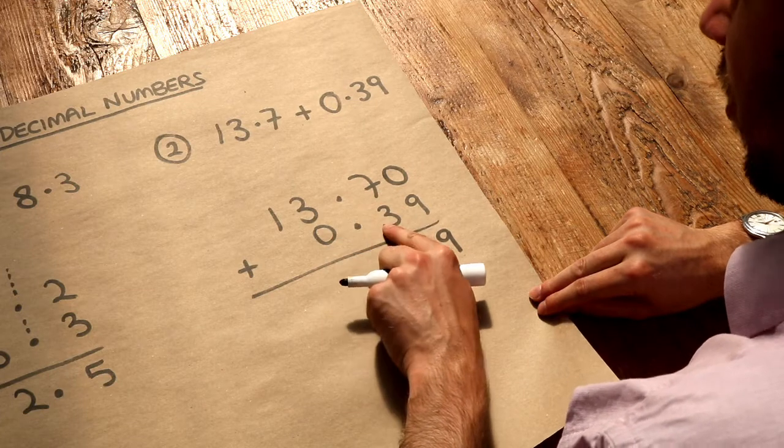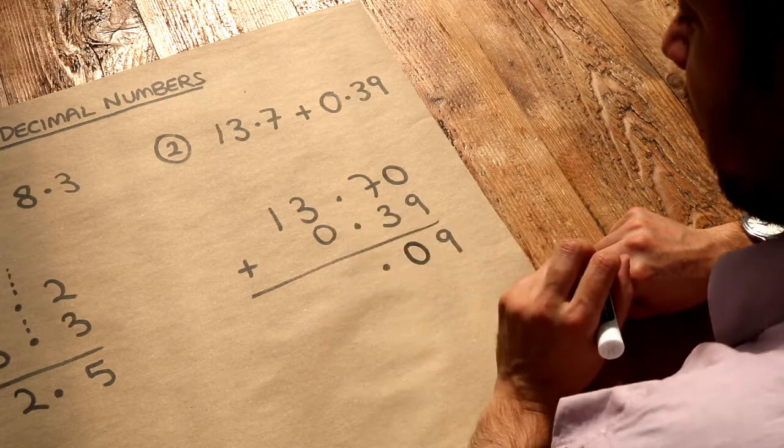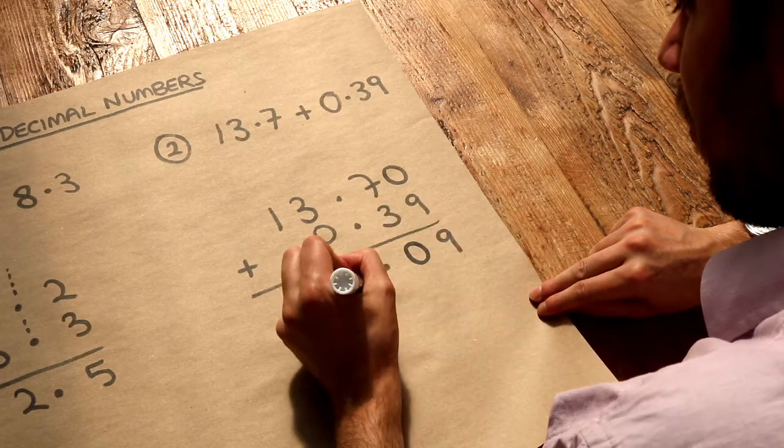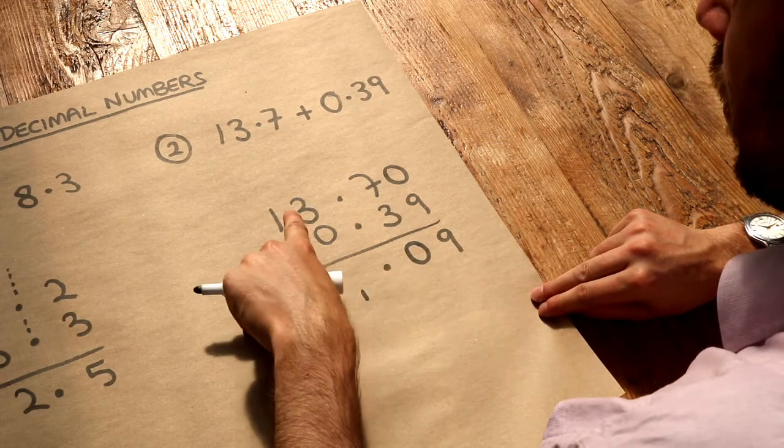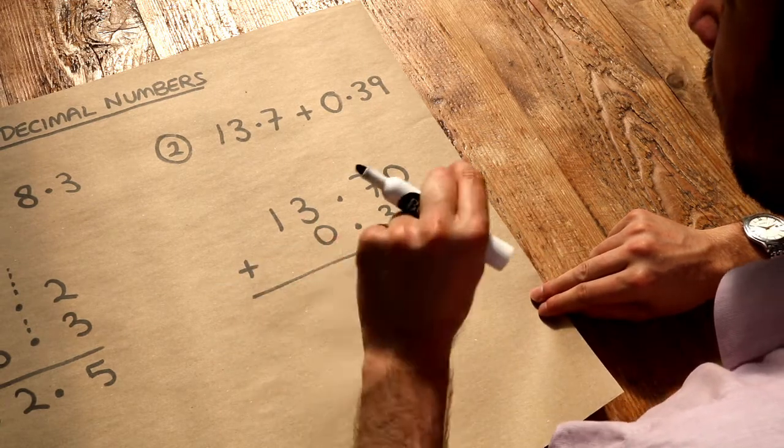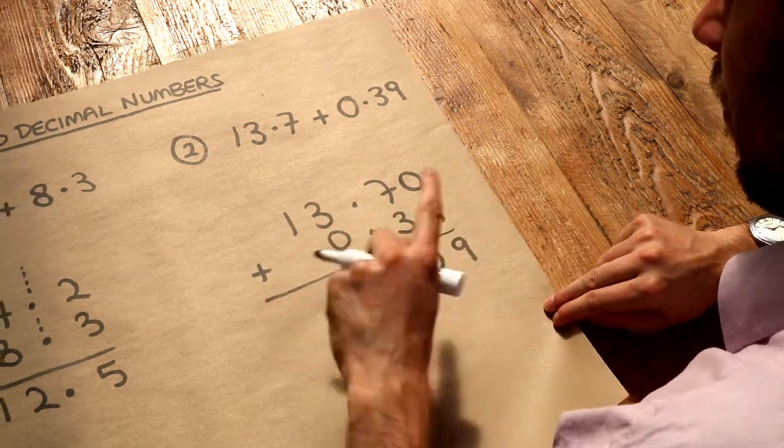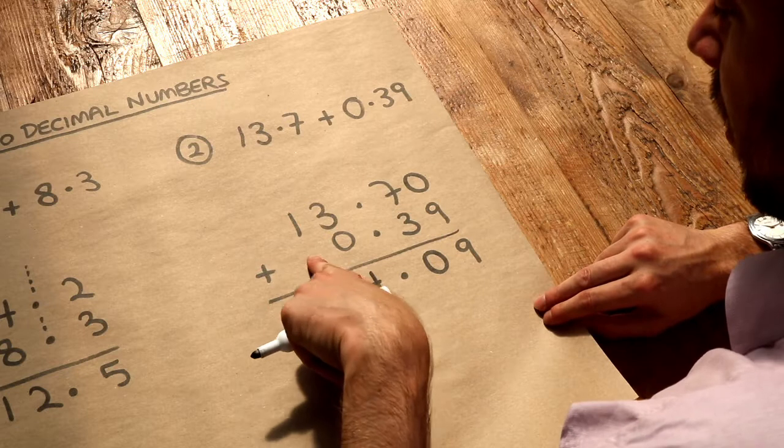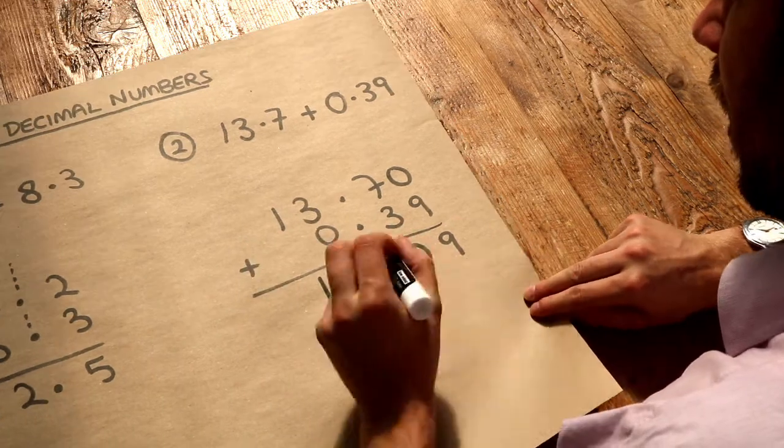I put the carried 1 down here as a little small number. Then we've got 3 plus 0 is 3, plus the carried 1 is 4. And then finally we've got 1 plus nothing—we can just imagine that's a 0—so that's just going to be 1. And that is the final result: 14.09.